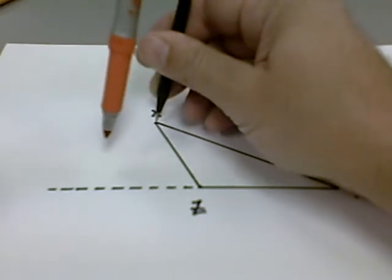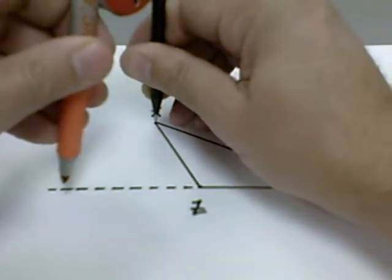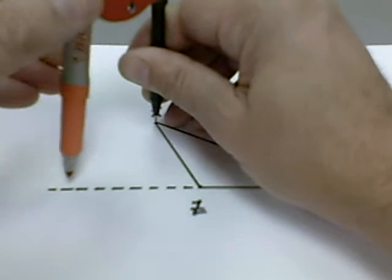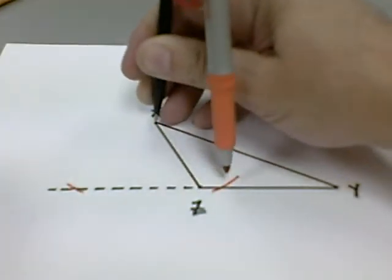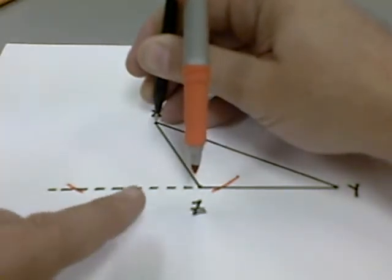So we'll place the stylus of our compass on the point, and we'll open it up so that we can intersect the line in two distinct places. And we have our two points.